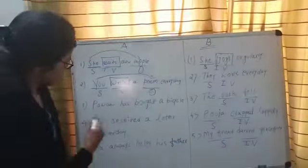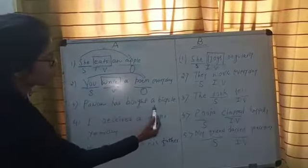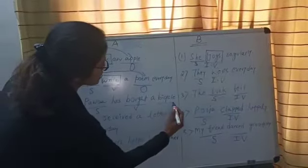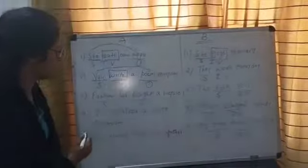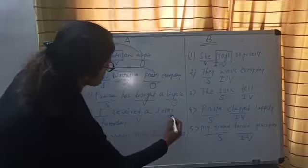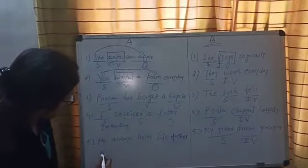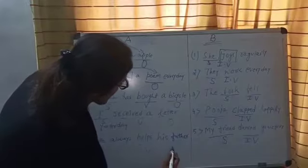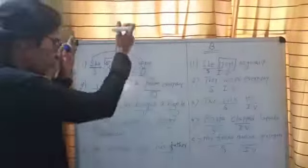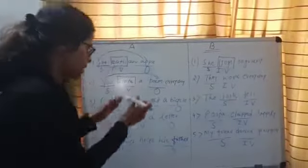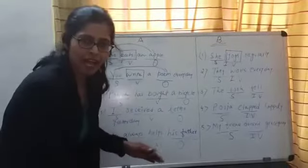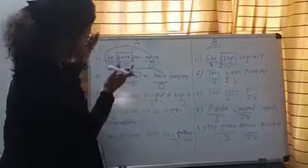I will quickly read out all these sentences. Pavan has bought a bicycle — 'Pavan' is the subject, 'bought' is the verb, and 'bicycle' is the object. Similarly, 'I' is the subject, 'received' is the verb, and 'letter' is the object. He helps his father — 'he' is the subject, 'helps' is the verb, and 'his father' is the object. All these verbs written in Column A have direct objects to receive the actions performed by their subjects.